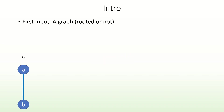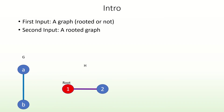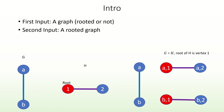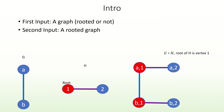The rooted product of graphs takes as its first input a graph, which can be rooted or not, and as its second input it takes a rooted graph. Intuitively, if we have our first input g and our second input h, then the rooted product of g with h is found by making one copy of h to correspond to each vertex in g, and then identifying — that is, merging — the root vertex in each copy of h with that copy's corresponding vertex in g.